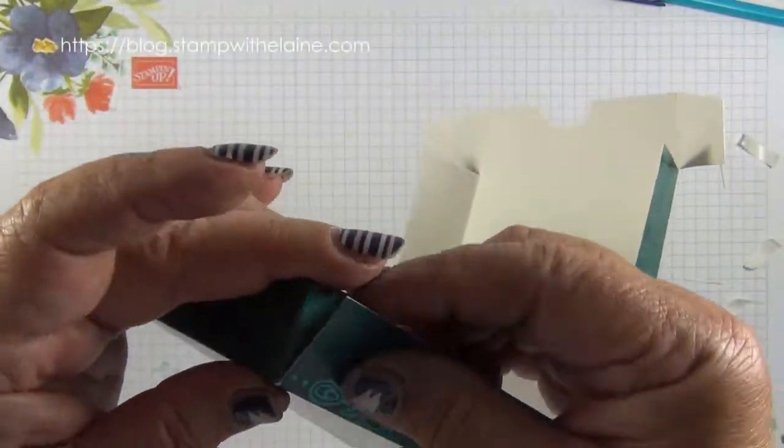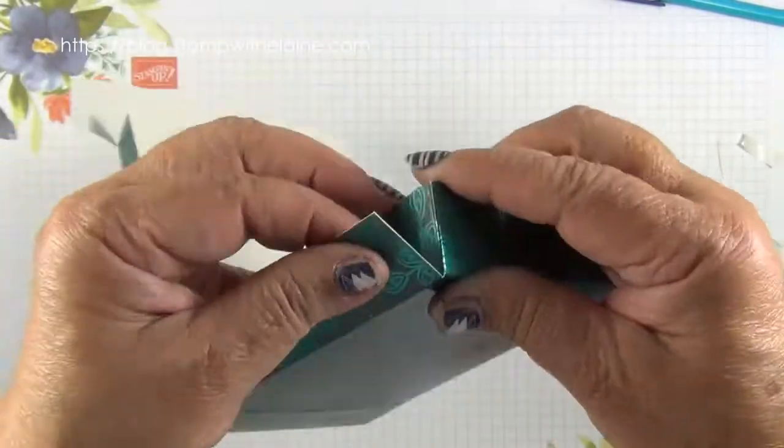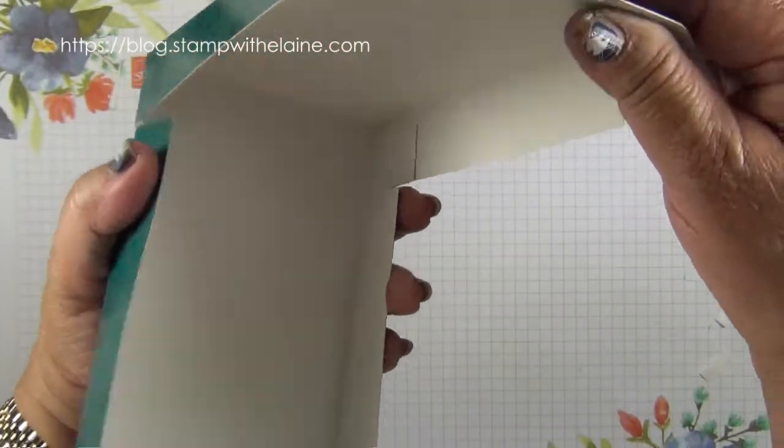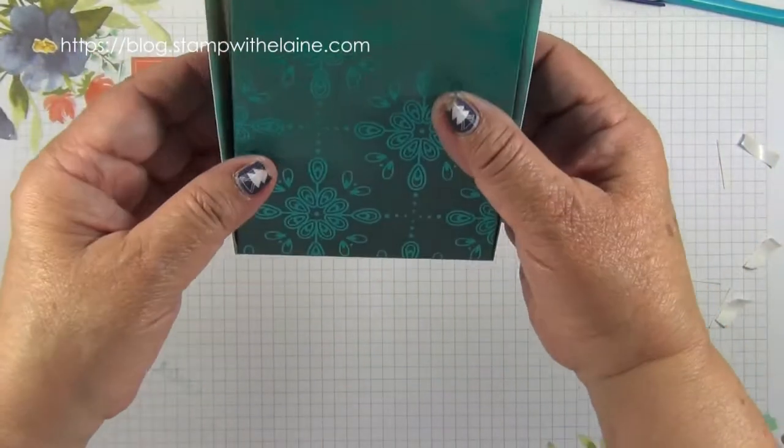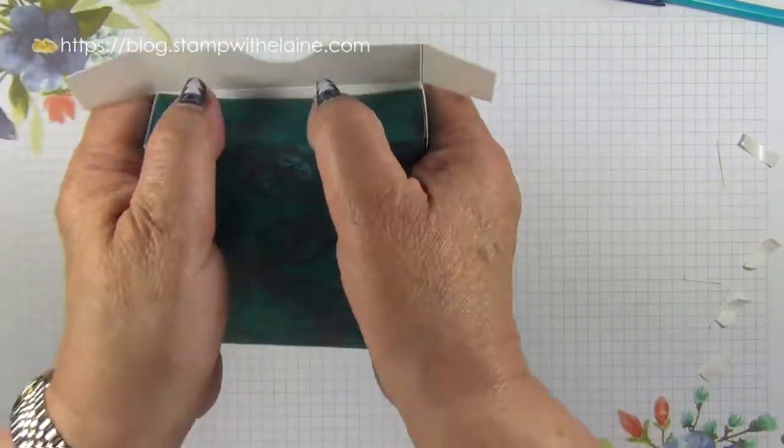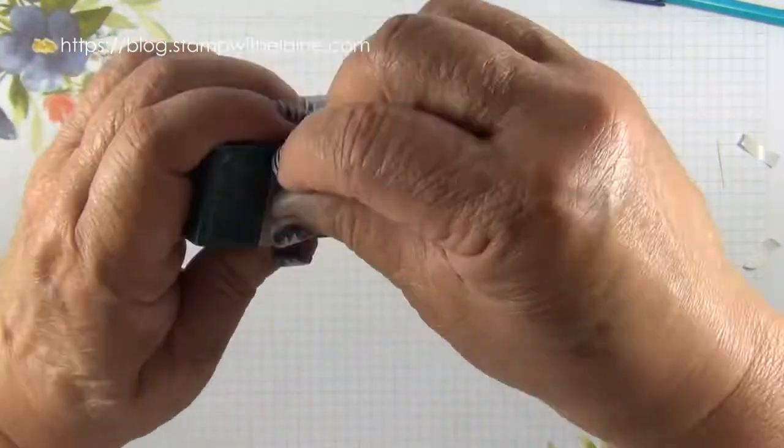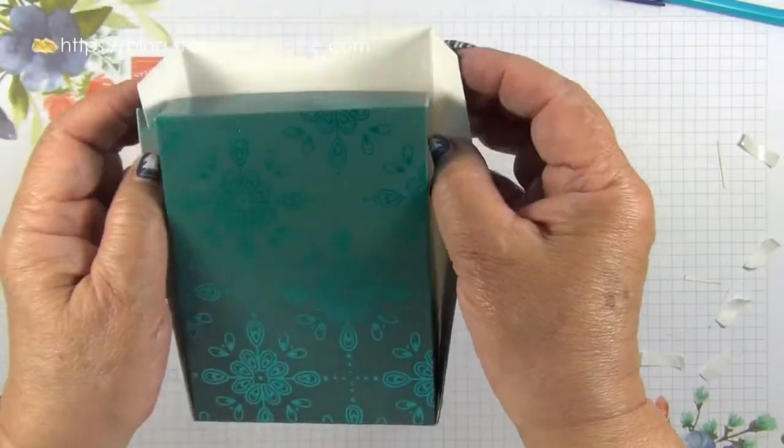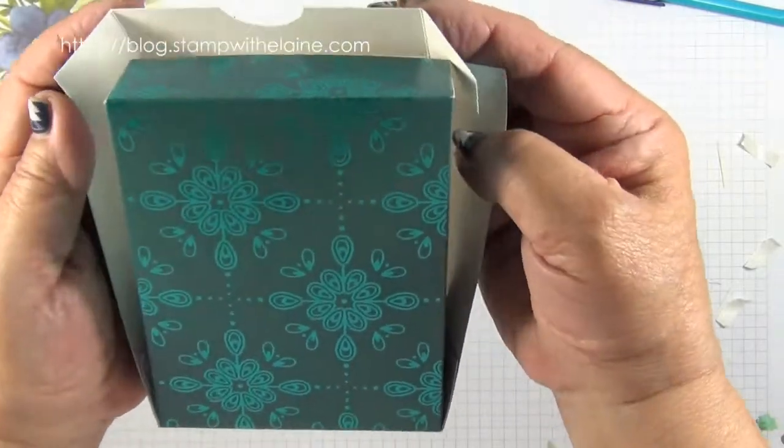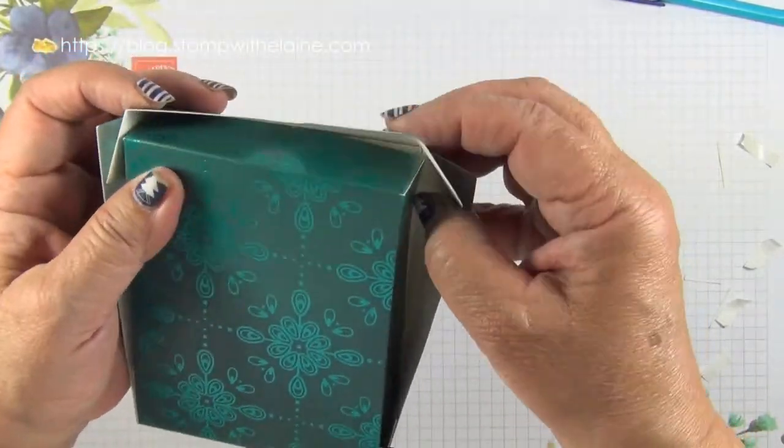Assemble the base. And just to make sure that this is going to fit, then you put that on the bottom and move the tabs first. Then put the tabs in over the box base.